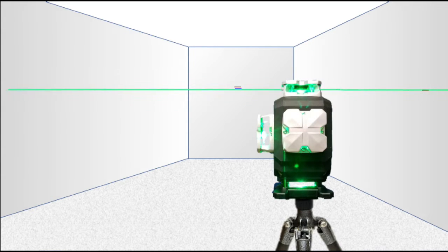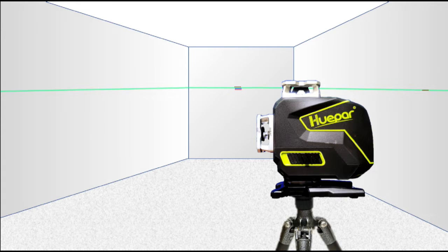Rotate the laser level 90 degrees again. Then make a third mark on the far wall in red. Rotate the laser level 90 degrees one more time, and make a fourth mark on the far wall in blue.